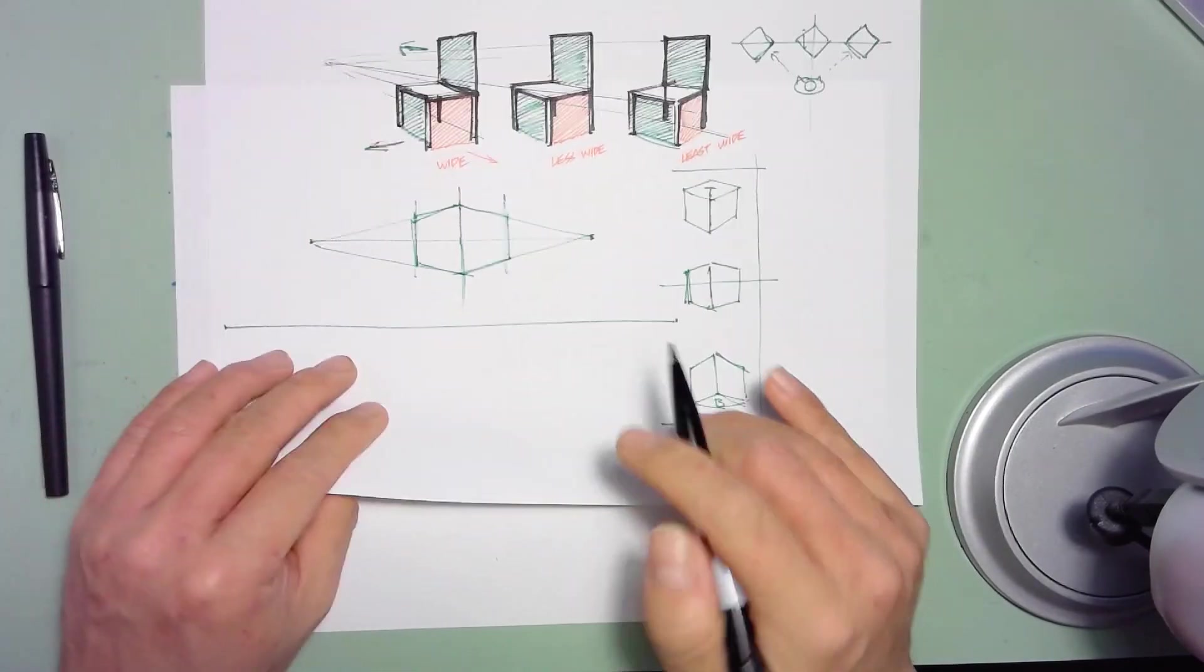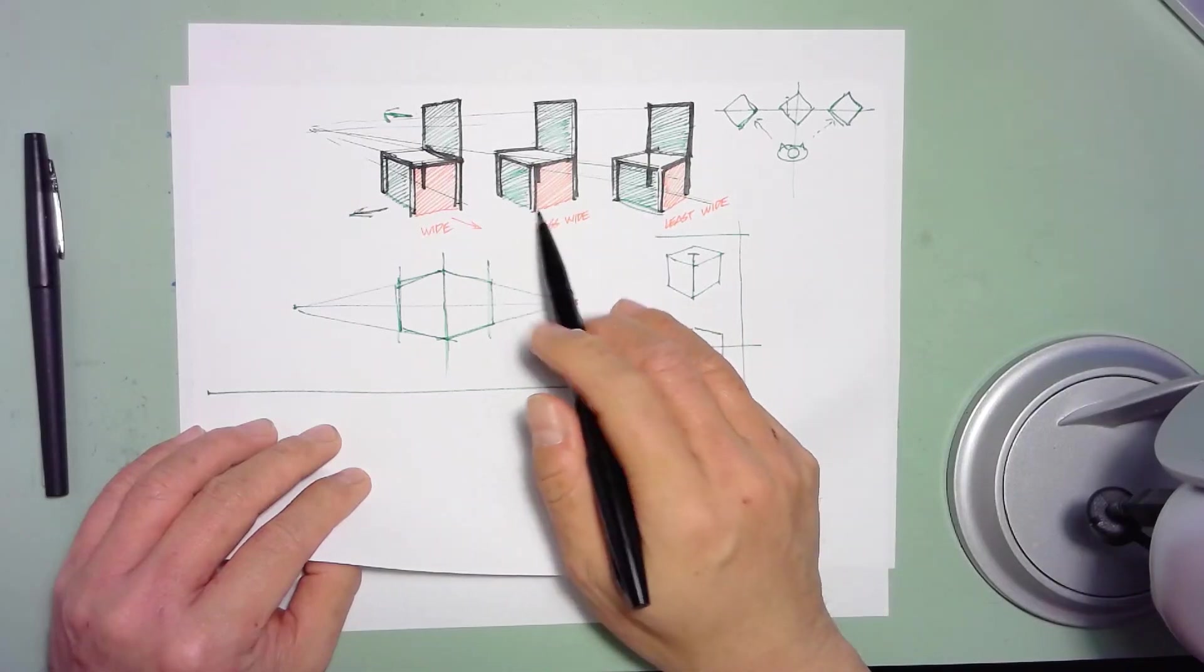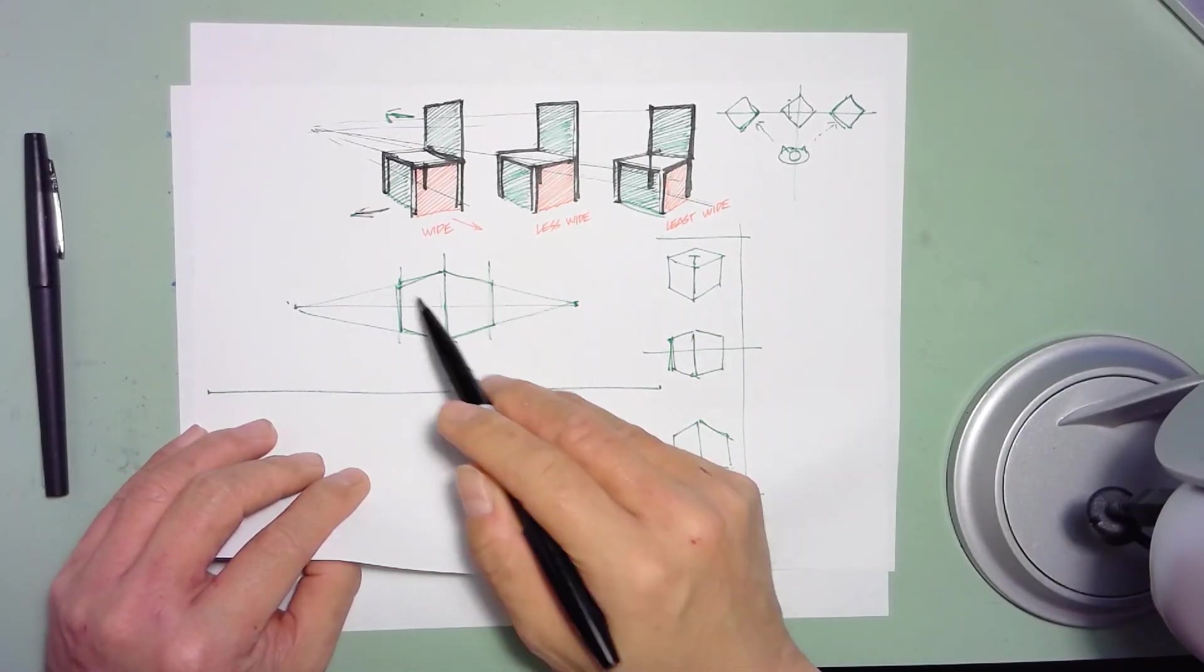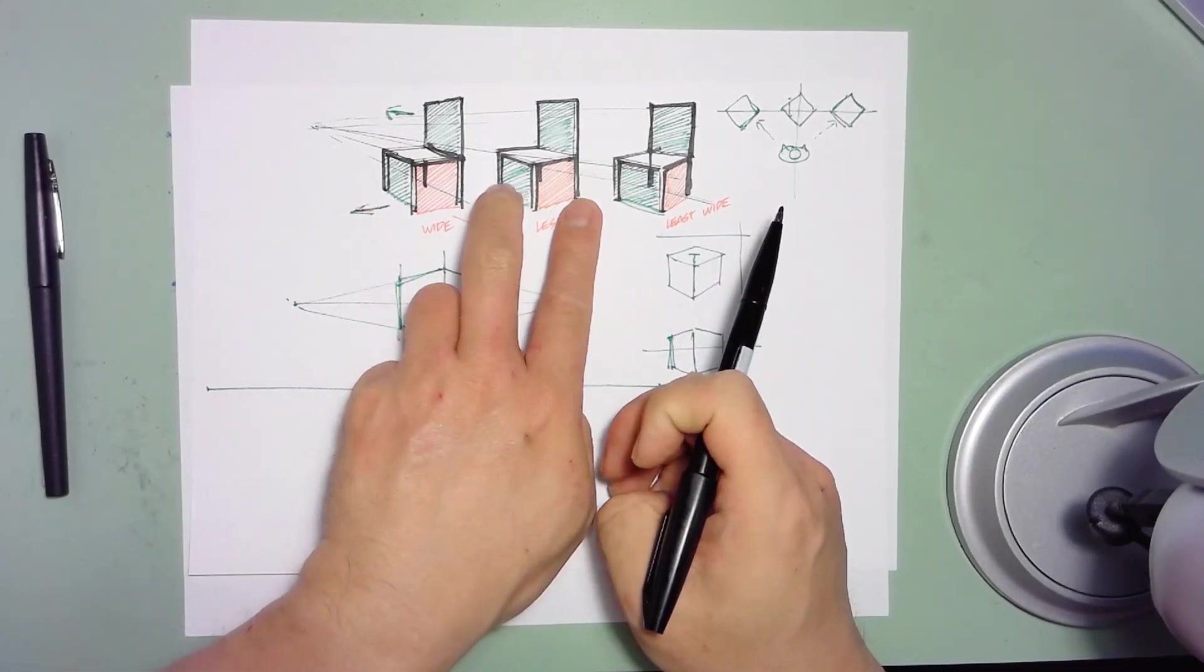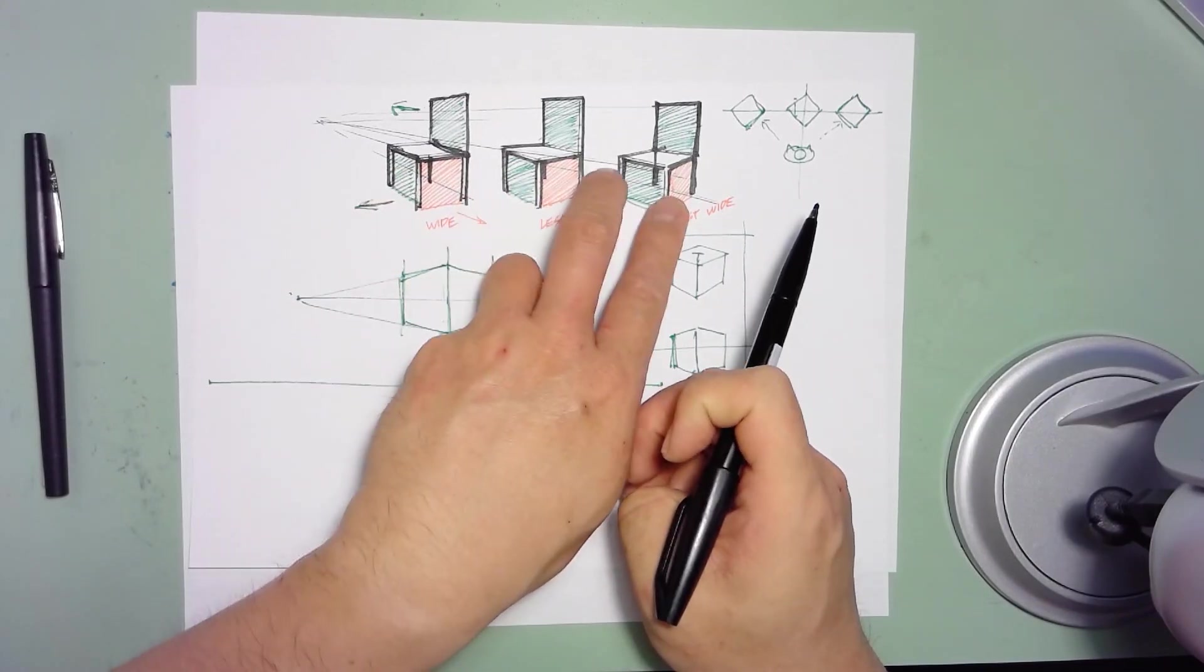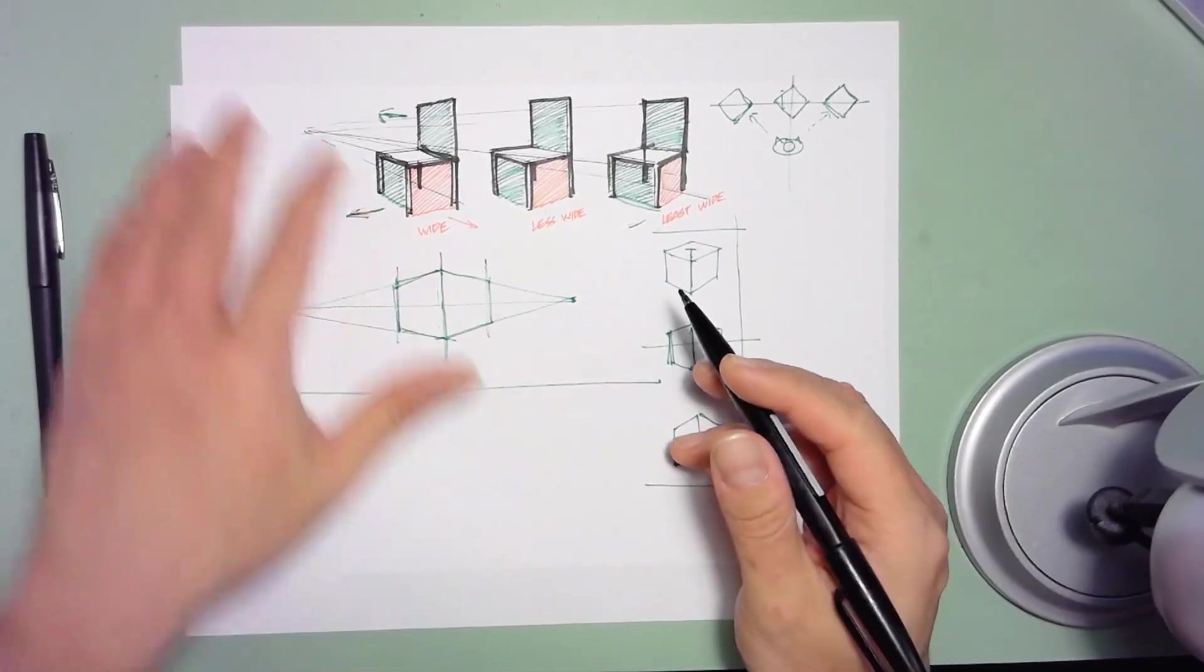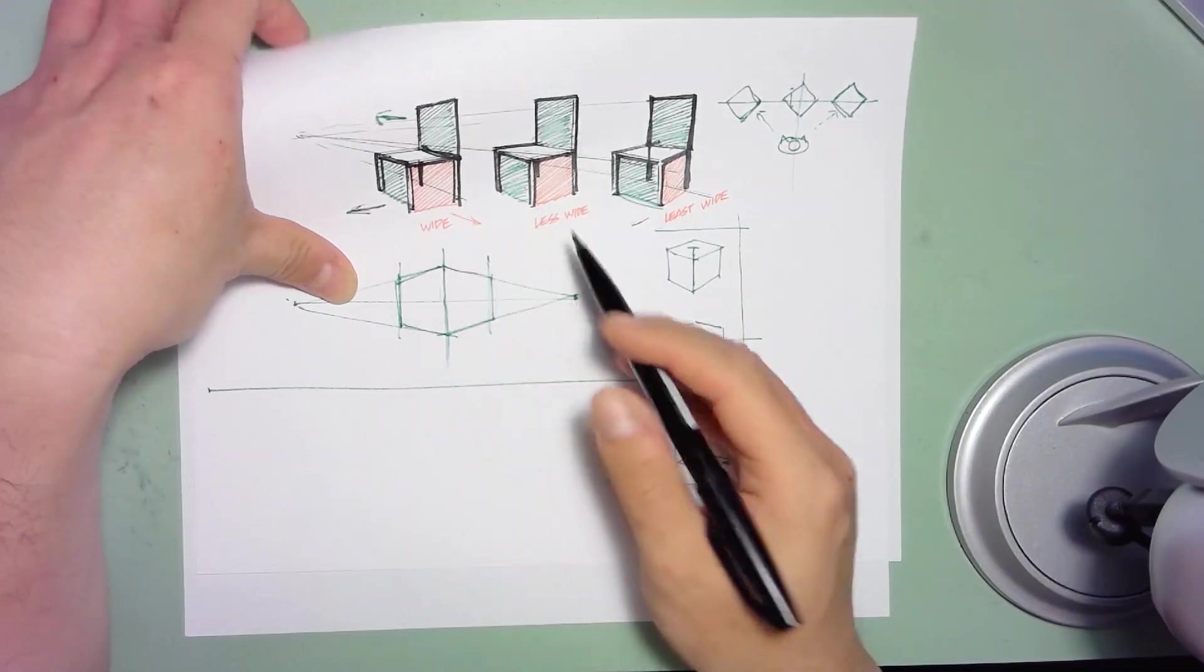In this particular part, I want to talk about how you can draw an object not just dead center between your two vanishing points, but also how to shift that object like in this example of the chair where we take the chair and shift it to the left and shift it to the right and how that affects the sketch itself and what you need to consider when you are shifting an object laterally.